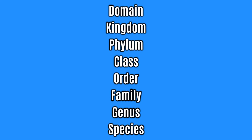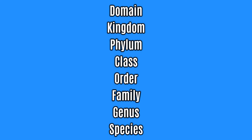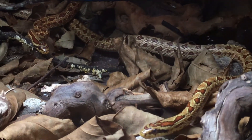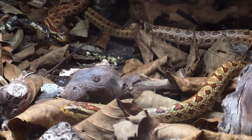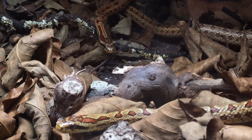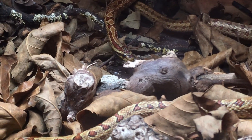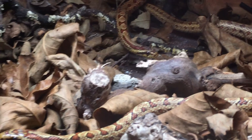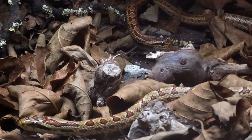So for example, we would like it to be the case that all members of the family Colubridae are more closely related to each other than they are to any other member of another family, for example Boidae.